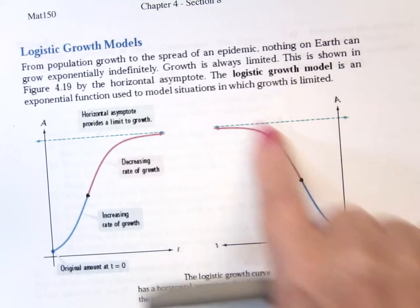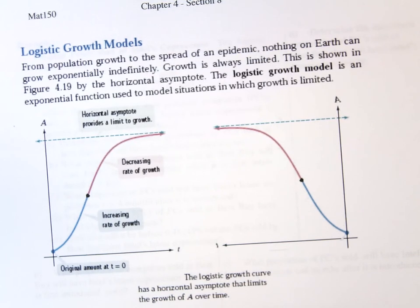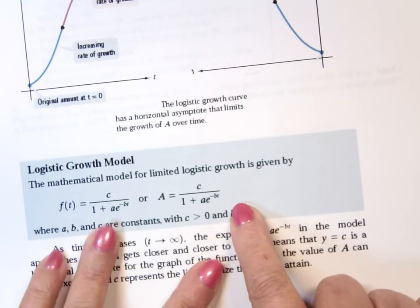Of course, one is increasing, one is decreasing. You can figure out negative is decreasing, positive is increasing. And that's what this basically says. Here's your logistical model.